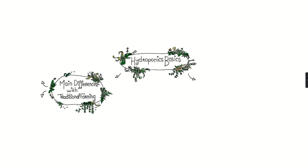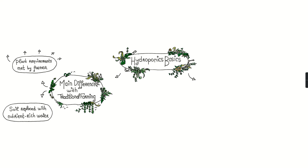What is the main difference between hydroponic farming and traditional farming? To put it simply, it is all about the medium in which the plant grows and scavenges for elements it needs to survive. In hydroponics, the soil is replaced by a nutrient-rich water solution, and all the requirements a plant needs to grow and thrive are directly met by the farmer.